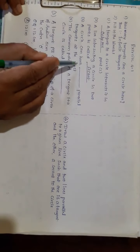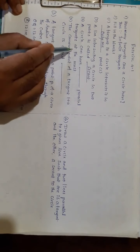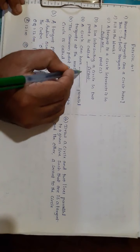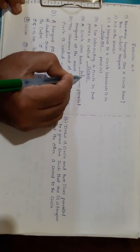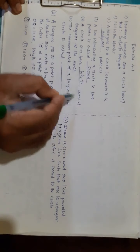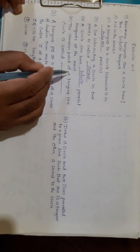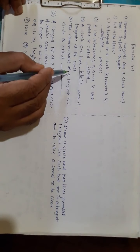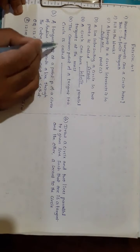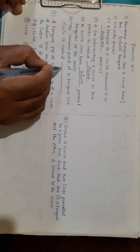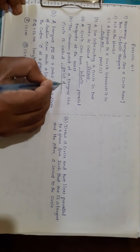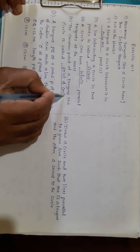Third blank: a circle can have infinite parallel tangents at the most. Fourth blank: the common point of a tangent to a circle is called the point of contact.